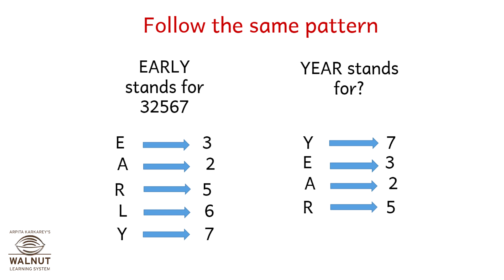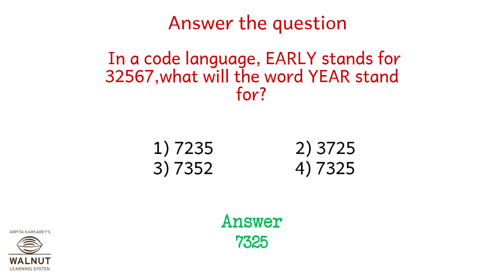A stands for 2 and R stands for 5. So the answer is 7325, option number 4.